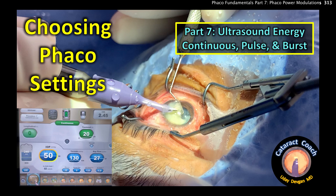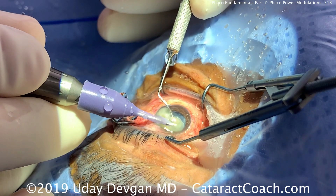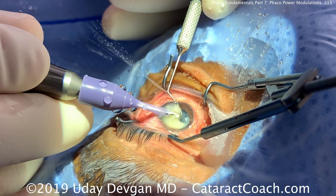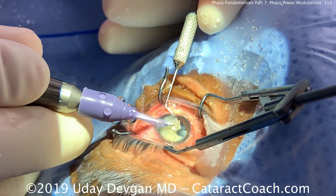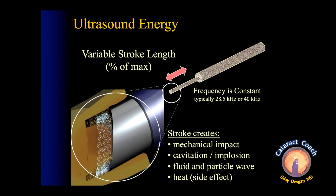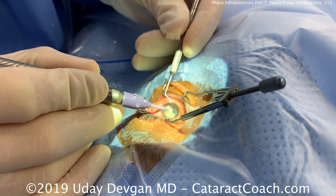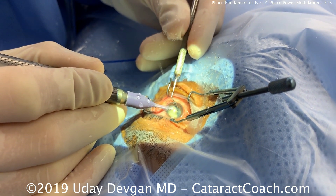From cataractcoach.com, this is part 7 on choosing phaco settings: ultrasound energy, continuous, pulse, and burst modes. In cataract surgery, ultrasound energy is used to break up the cataract, even dense ones. The energy has a variable stroke length as a percent of maximum, while the frequency is constant. The stroke creates mechanical impact, cavitation, and implosion, along with fluid and particle waves, to break up the cataract — though a side effect is heat generation.